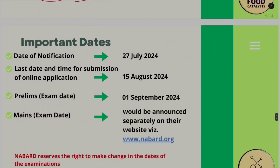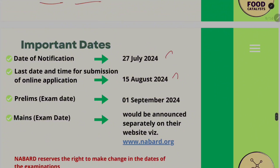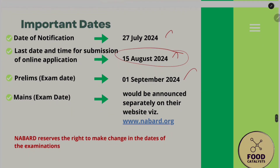Important dates: the notification date is 27th July and the last date for submission is 15th August. No correction window date has been mentioned, so complete all payments before 15th August. The prelims date is in September and the mains date will be announced later. NABARD may revise dates, so check their website regularly for updates.